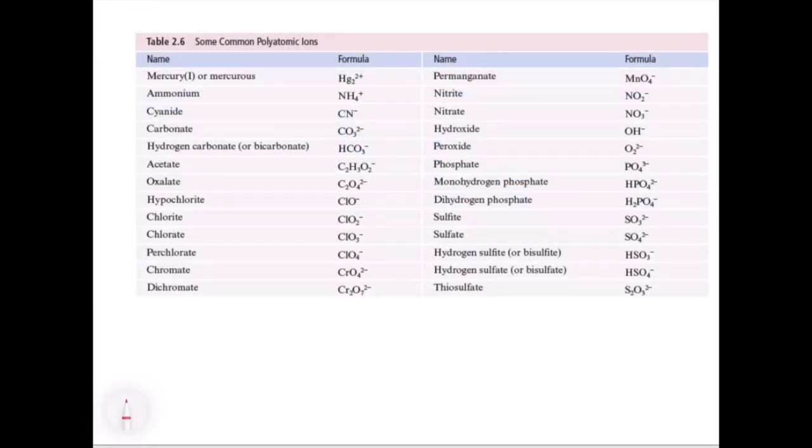This table here has the polyatomic ions. So this is where you have to start to do some memorization. You do have to memorize these polyatomic ions. You have to know that carbonate is CO3 with a 2 minus charge. So not only do you have to know the compound formula, you have to know the charge. We recommend making flashcards for this so that you have those memorized.